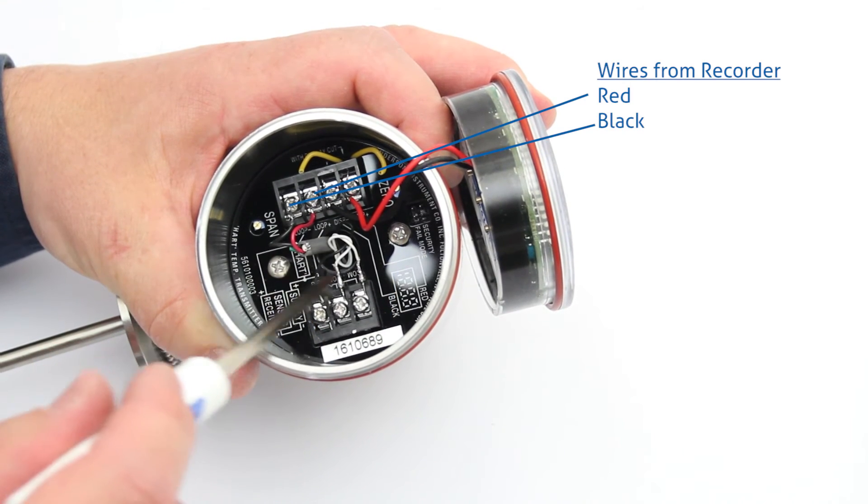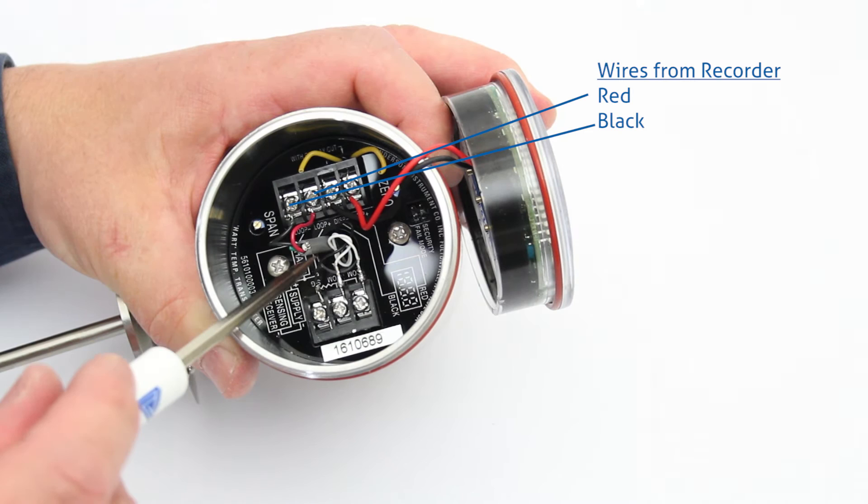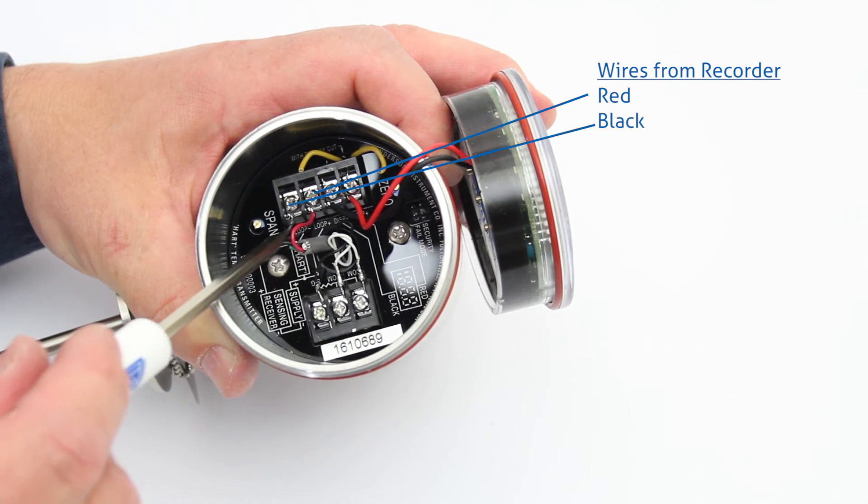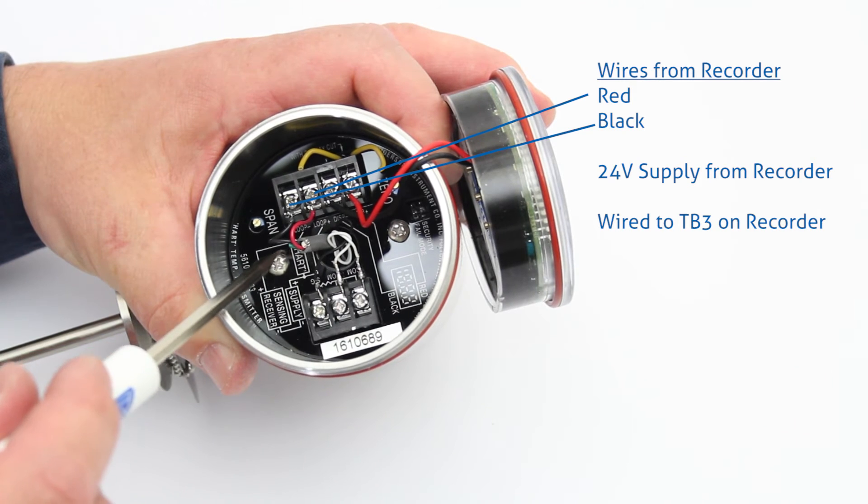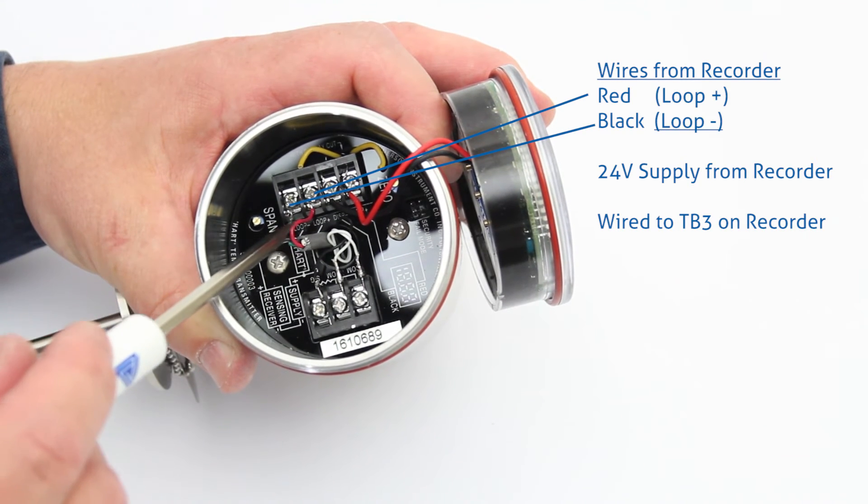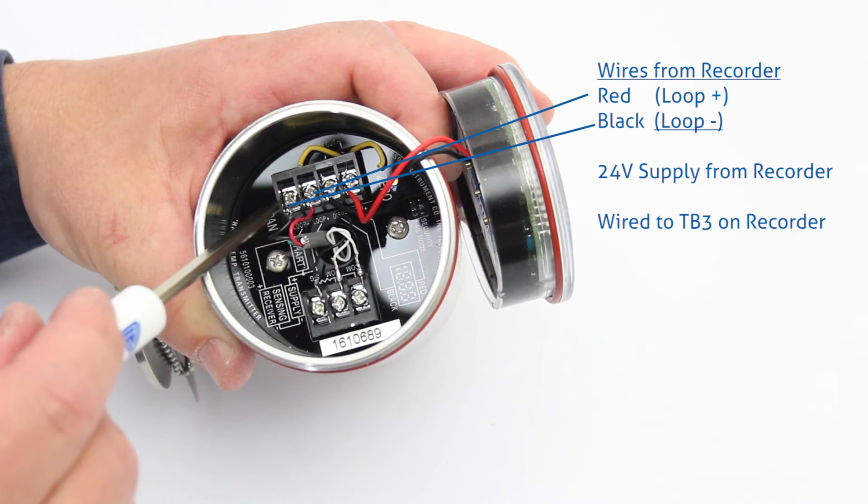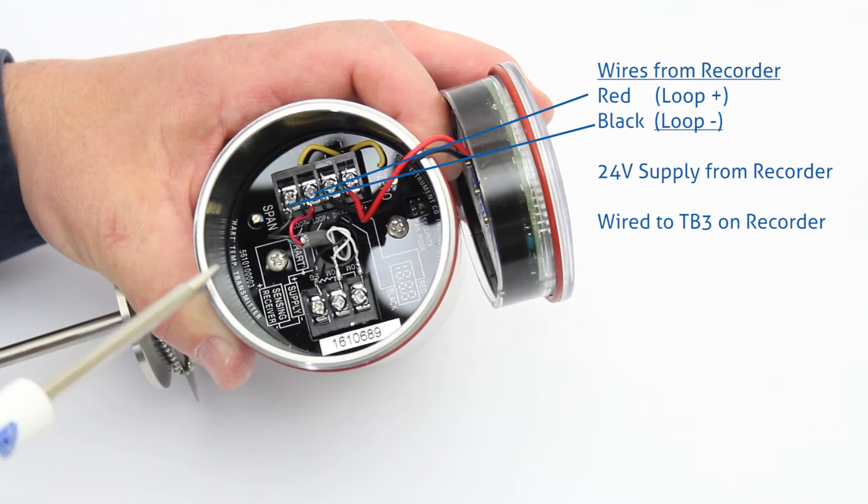In the hole in the center of the puck is where the wires come through and then we have the red and the black wire that are the 24 volt supply coming from TB3 on the recorder. The red wire gets connected to the loop plus terminal, the black wire gets connected to the loop minus terminal.